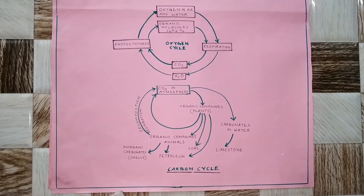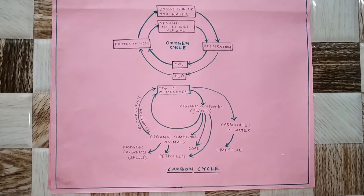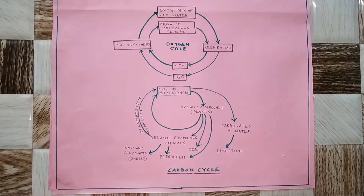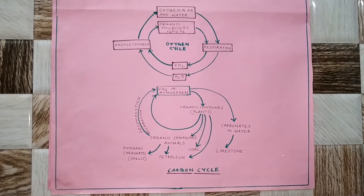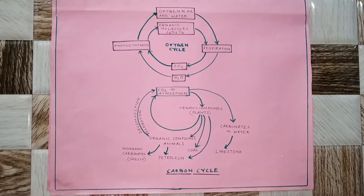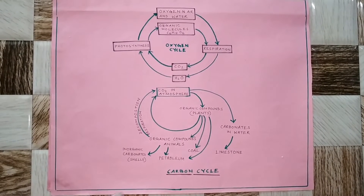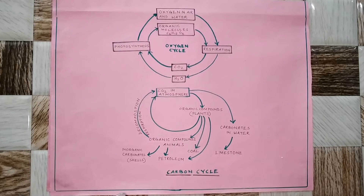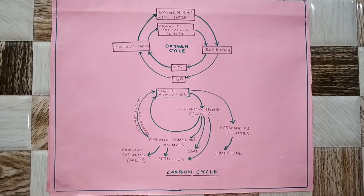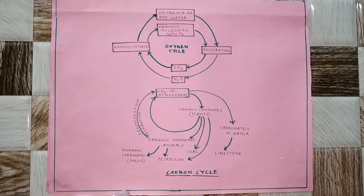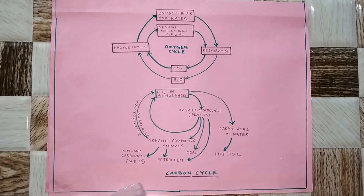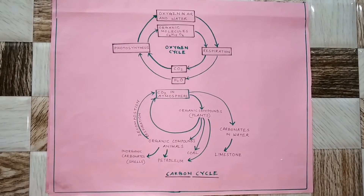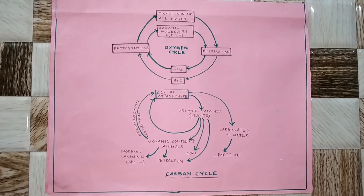So, in these three processes — combustion, respiration, and the formation of oxides of nitrogen — oxygen is being used up. But interestingly, oxygen is formed in nature by just one process, that is through photosynthesis.